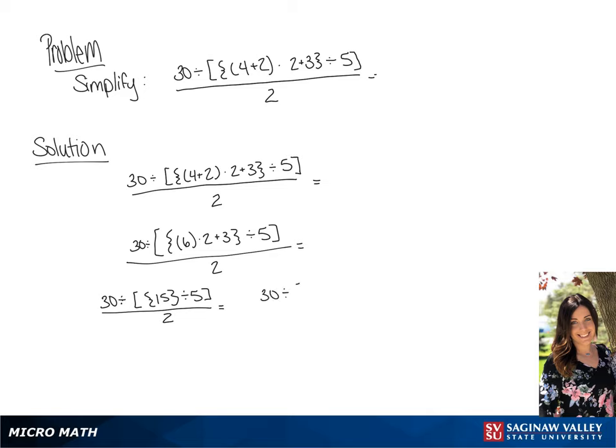And now we're going to simplify what's in the brackets. So we have 30 divided by 3 all over 2. And if we simplify this, this is 10 over 2, which is equal to 5.